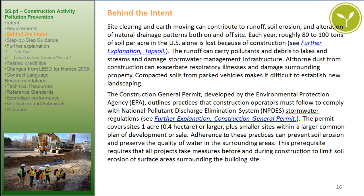Behind the Intent: Site clearing and earth-moving can contribute to runoff, soil erosion, and alteration of natural drainage patterns both on-site and off-site. Each year, roughly 80 to 100 tons of soil per acre in the U.S. alone is lost because of construction. The runoff can carry pollutants and debris to lakes and streams and damage stormwater management infrastructure. Airborne dust from construction can exacerbate respiratory illnesses and damage surrounding property. Compacted soils from parked vehicles make it difficult to establish new landscaping.